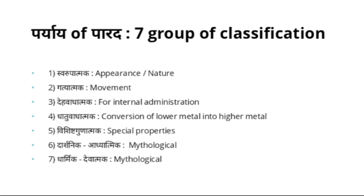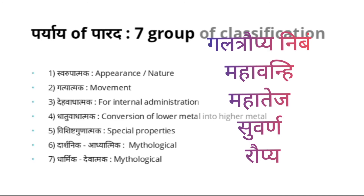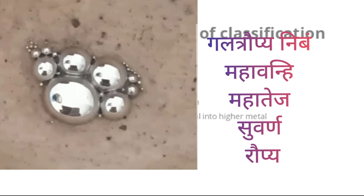Svarupatmaka — based on its appearance and nature — we have synonyms like Galat Raupya Nibham, Mahavanhi, Mahateja, Suvalna, and Raupya. Galat Raupya Nibham means it is the misunderstood silver, because it has a luster like silver. Mahavanhi and Mahateja refer to its high luster and high shining. Suvalna — it lusters like gold. And Raupya — it also lusters like silver.